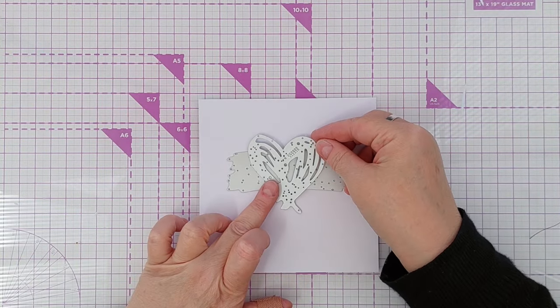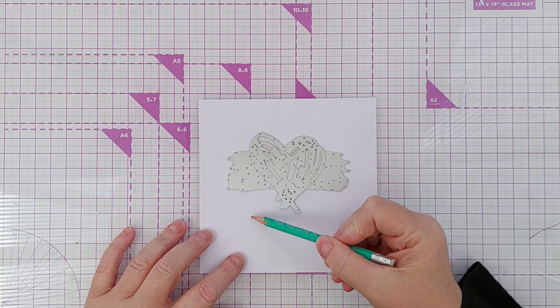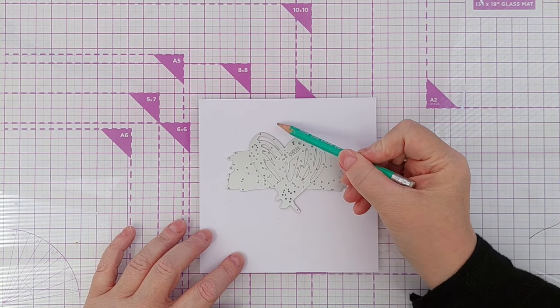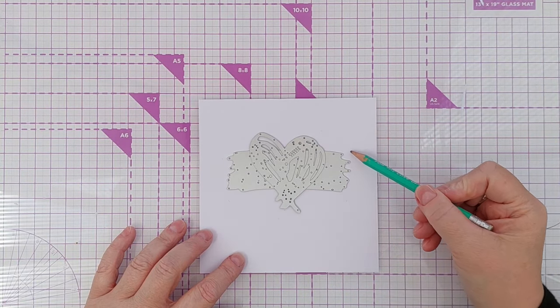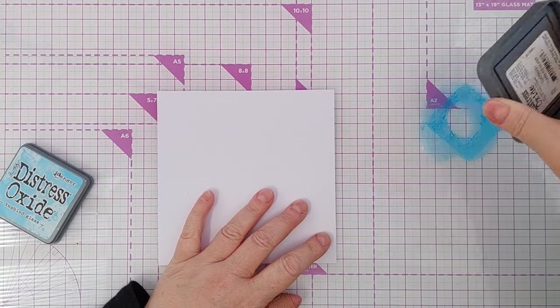Today I'm using a 6x6 inch piece of smooth white cardstock as my card panel. I placed two of the dies where I wanted them to be and drew very lightly around them in pencil so that I knew where to smush my ink.